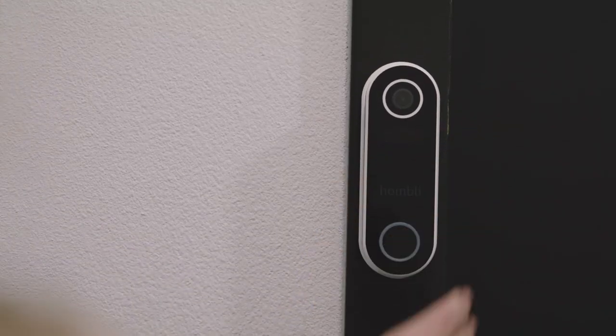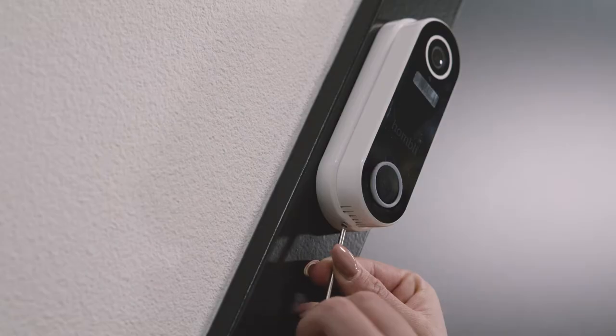Place the doorbell in the bracket. Tighten the security screw. Now your Smart Doorbell 2 is ready for use.